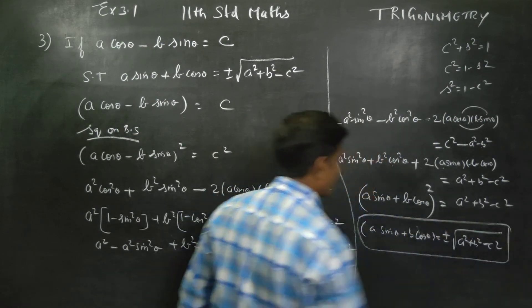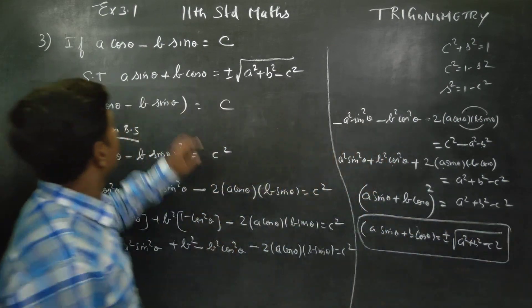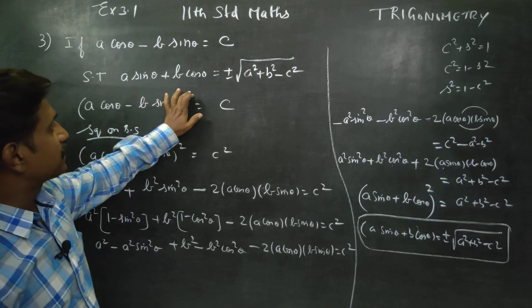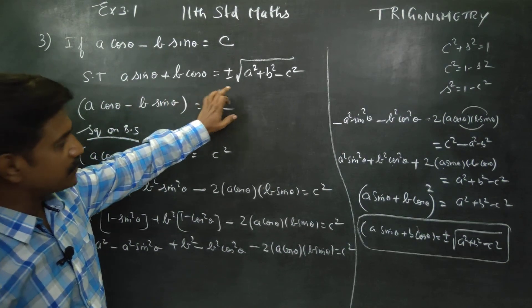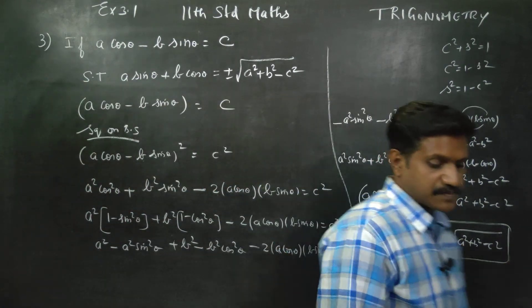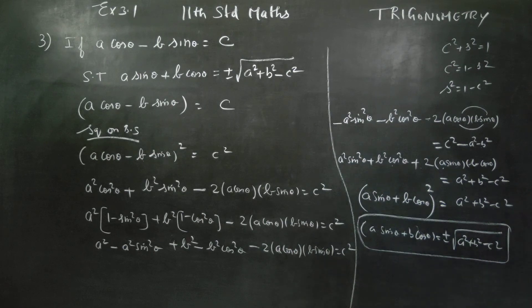Therefore, A sin theta plus B cos theta is equal to plus or minus square root of A square plus B square minus C square. Hence proved. This is your final answer. Thank you.